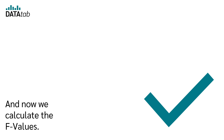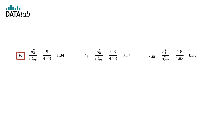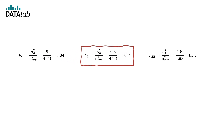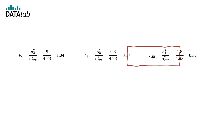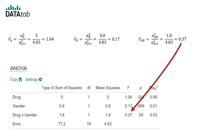Now we calculate the F values. These are obtained by dividing the variance of factor A, B, or the interaction by the error variance. So the F value for factor A equals the variance of factor A divided by the error variance, which equals 1.04. We do exactly the same for F(B) and F(A,B). To verify, we get exactly the same values using software: 1.04, 0.17, and 0.37.